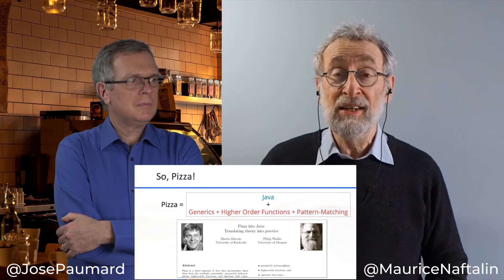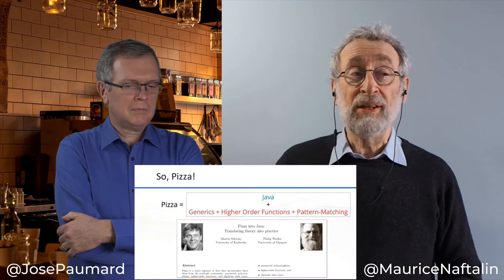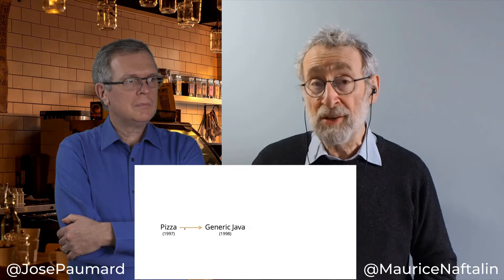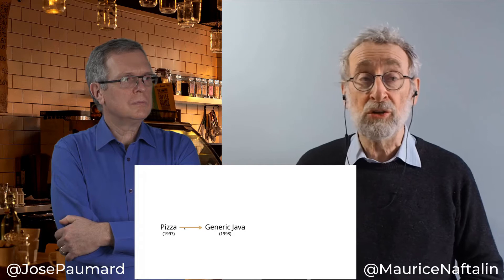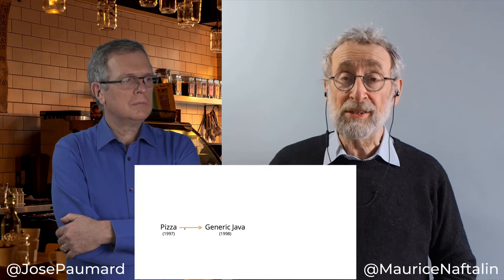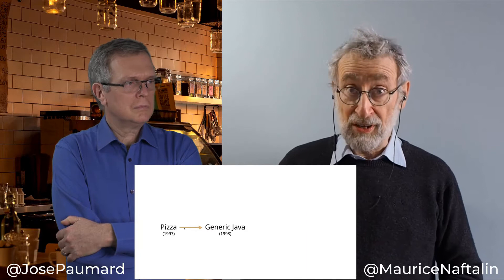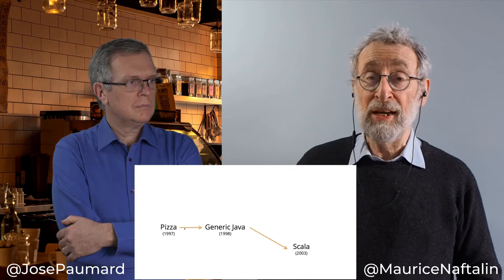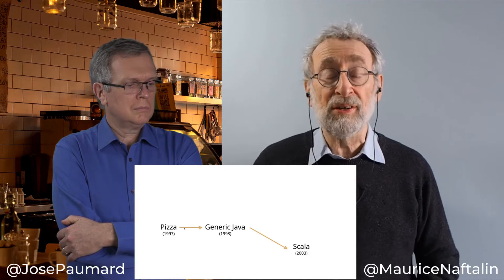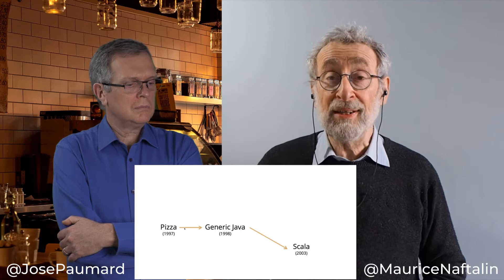Following the presentation of PIZZA, Sun Microsystems adopted it and focused on the generics element, producing another proof of concept language. Odersky and Wadler, with two contributors from Sun, created a language called Generic Java, which handled the backward compatibility problems we're going to discuss. But those problems were great, and they frustrated Odersky enough that he decided to start from scratch with a totally new language, Scala, which was launched in 2003.